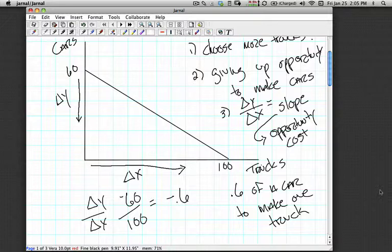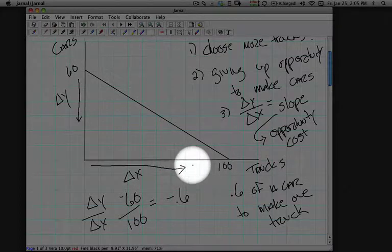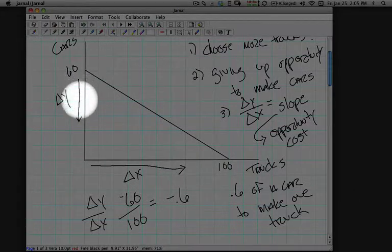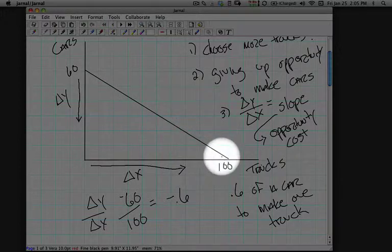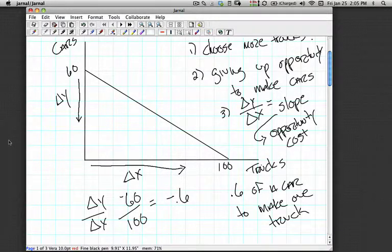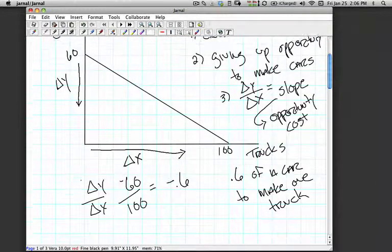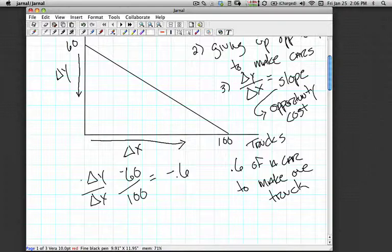As they move one unit along the x-axis, they're moving 0.6 units down the y-axis to maintain that slope. The slope of the line, therefore, is the opportunity cost that the firm is confronted with in terms of moving more to truck production from cars.